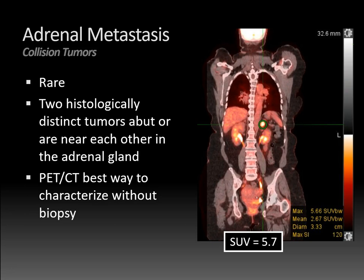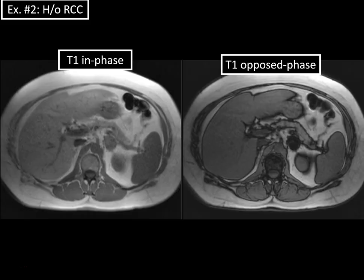There are other modalities on which you can still make this diagnosis. In this case — a patient with a history of renal cell carcinoma — on in-phase and opposed-phase T1-weighted MRI, there's a left adrenal nodule on the in-phase image that completely drops out on the out-of-phase image, becoming very dark. This is diagnostic of a lipid-rich adrenal adenoma and benign.